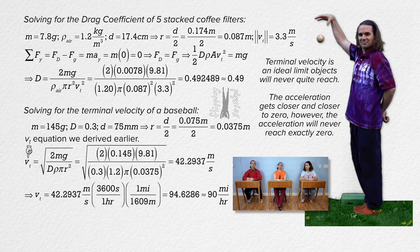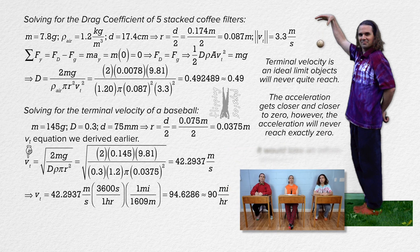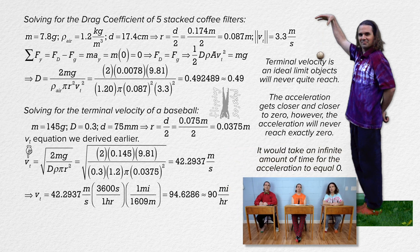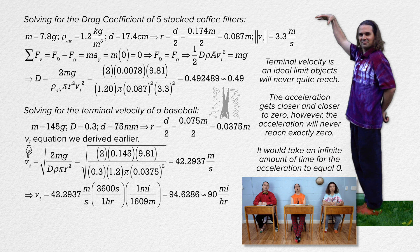Technically, it would take an infinite amount of time for the acceleration to reach exactly zero, which is never going to happen. So, rephrasing the question: how far does a dropped baseball have to go before getting close to its terminal velocity?